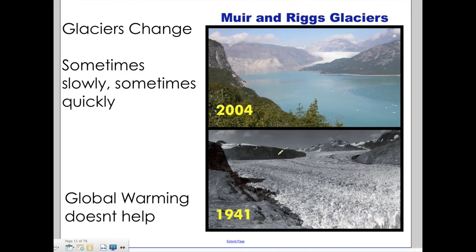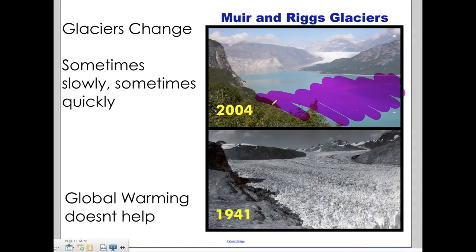Over time, glaciers will grow and recede — they move down the hill and then melt back up the hill. They never flow uphill, but if they melt more than they advance, they appear to get smaller. The Muir Glacier in Alaska in 1941 was this big, but by 2004, the entire area under ice had melted away and become a lake, and the glacier's border has retreated all the way back up the hillside.